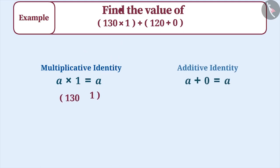Multiplying the number 130 by 1 gives the same whole number, that is, 130. Similarly, when 120 is added to 0, we will get the same number.